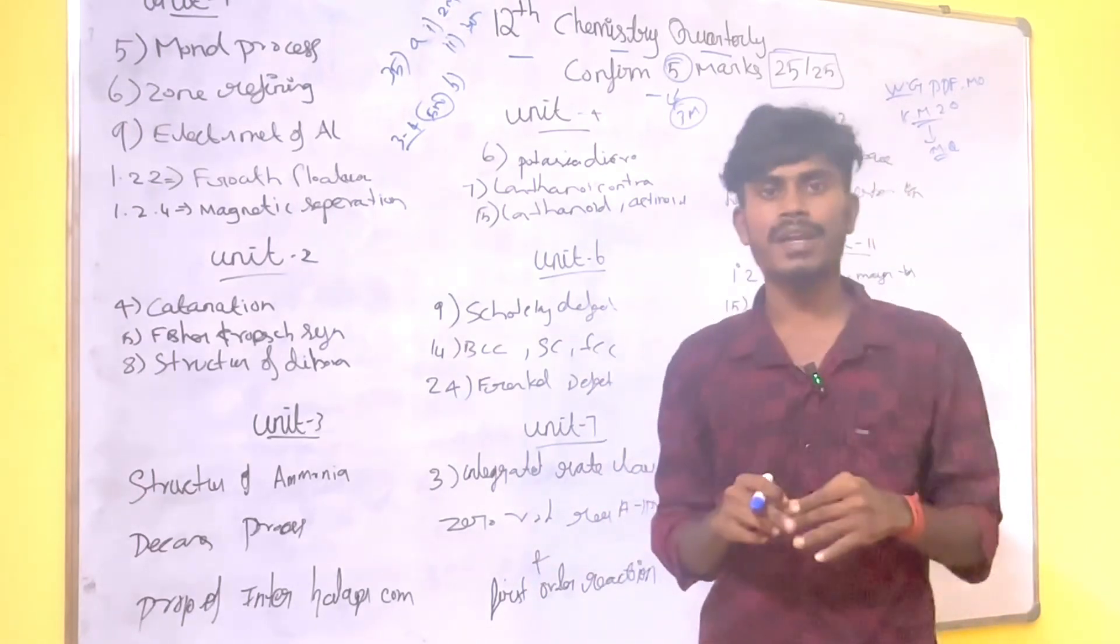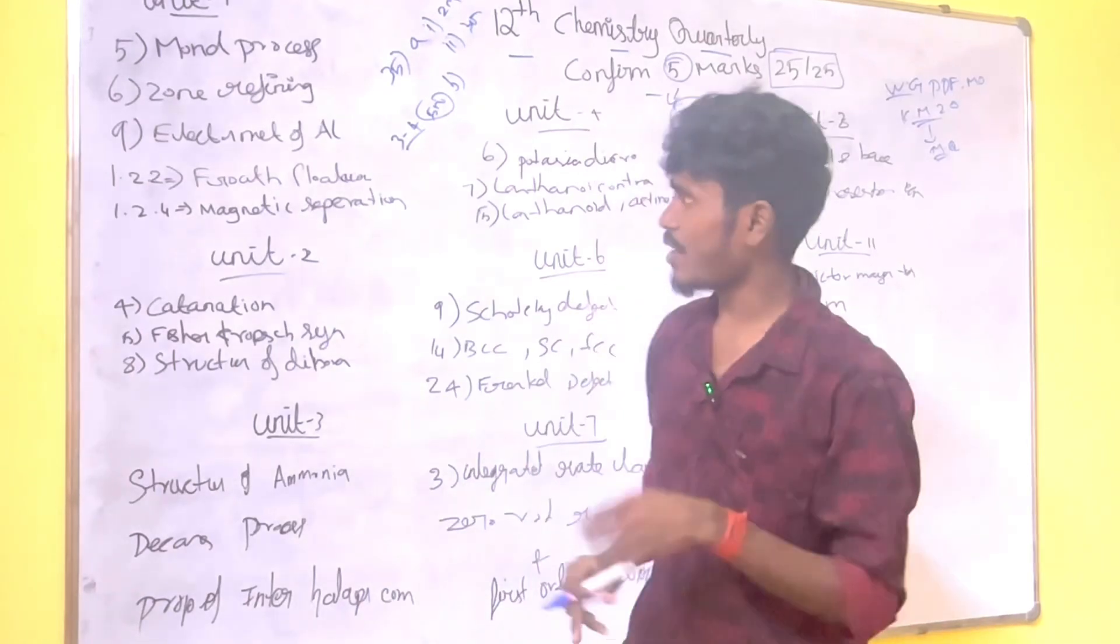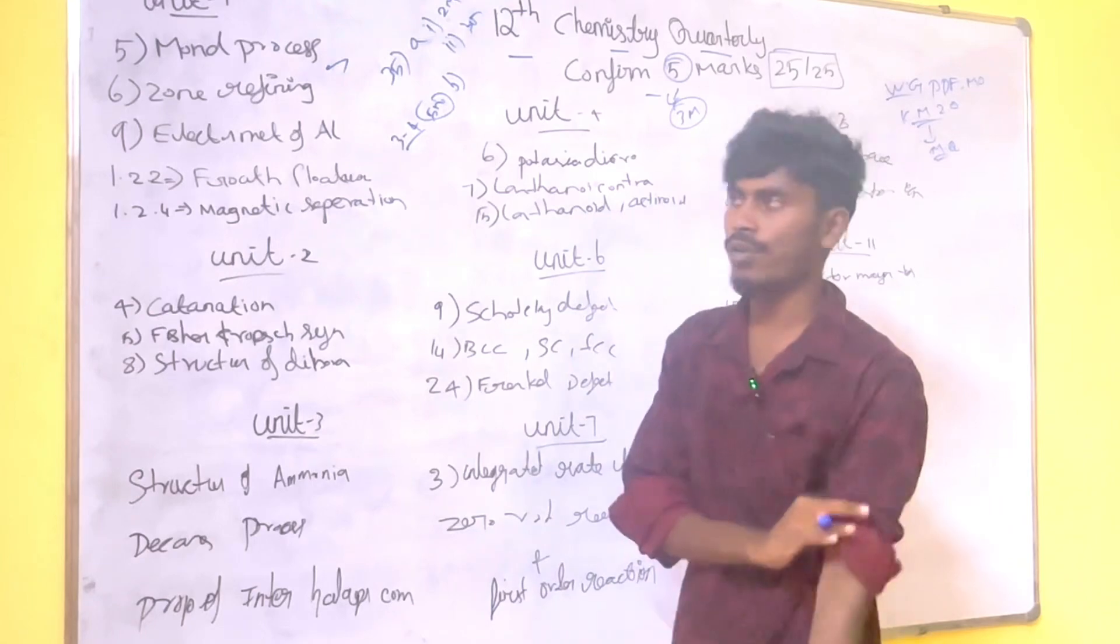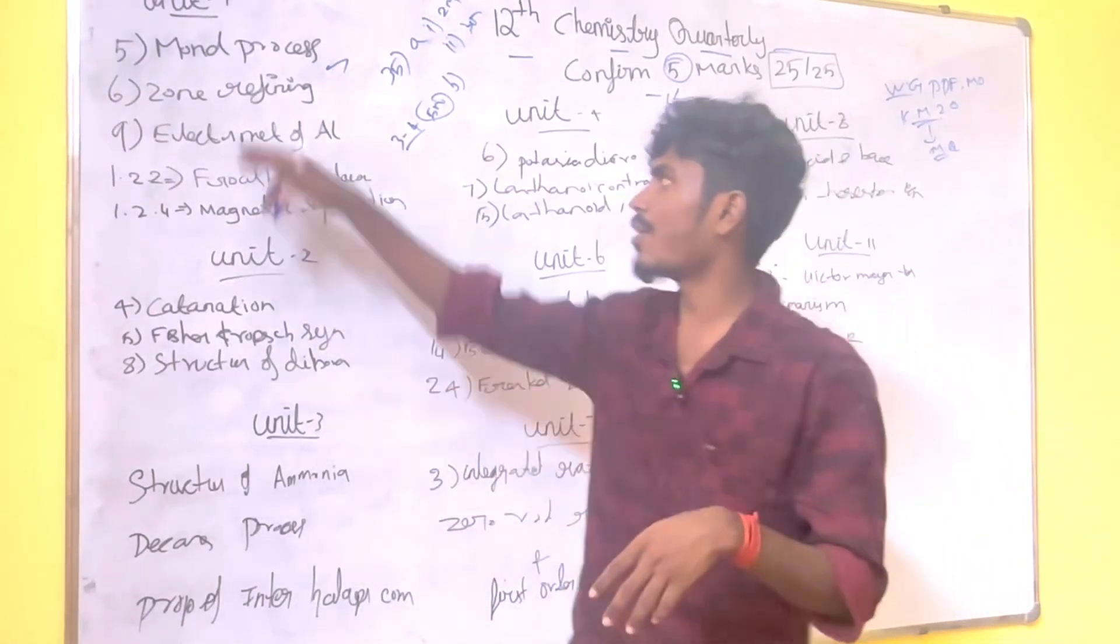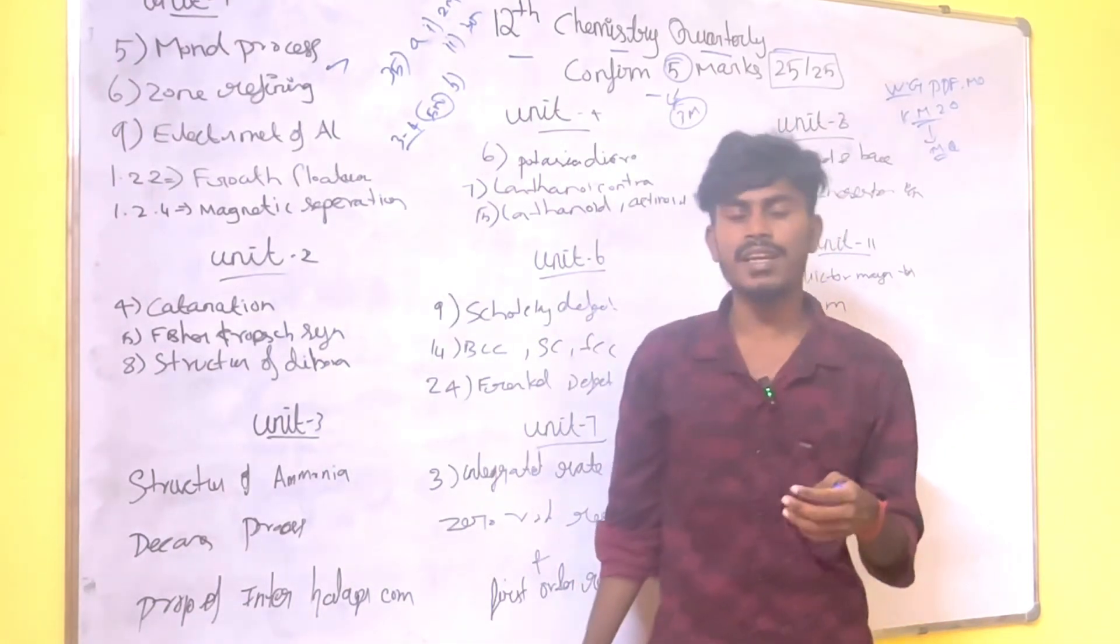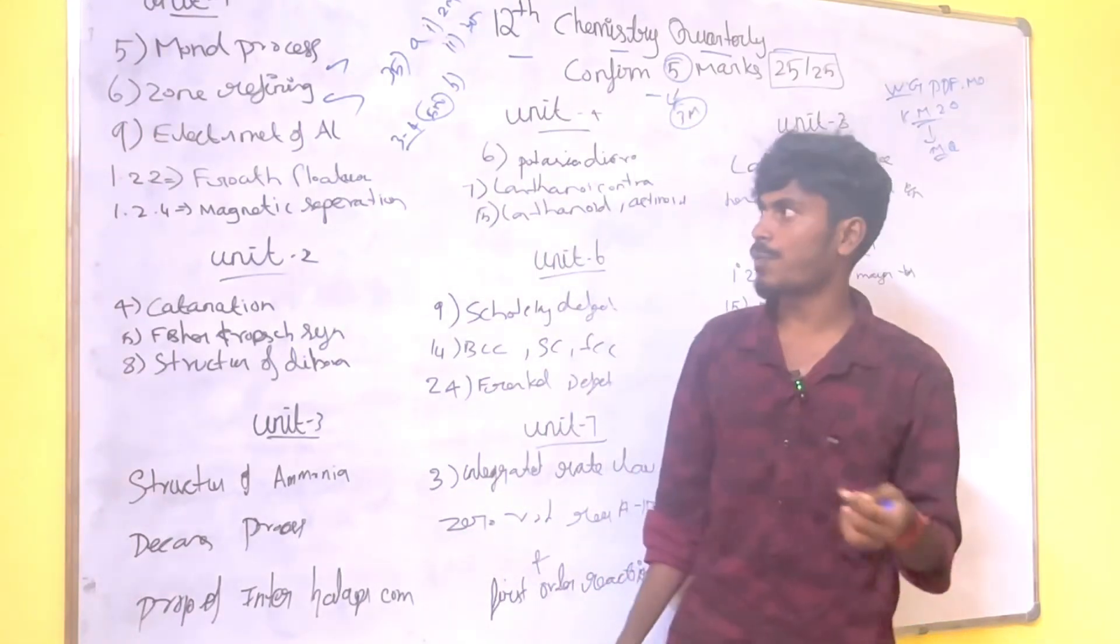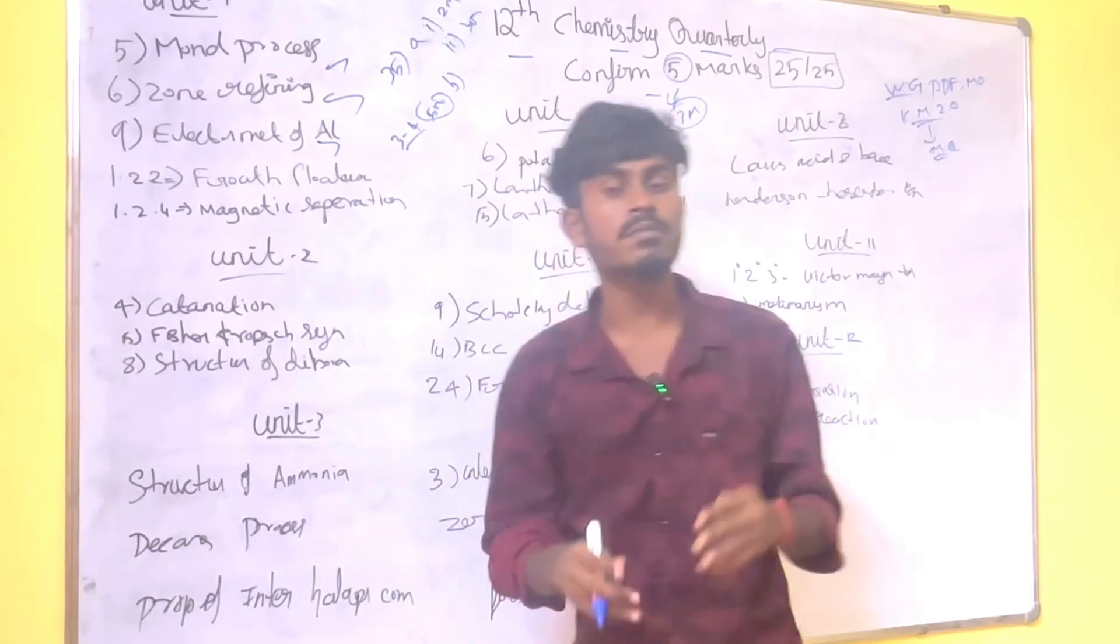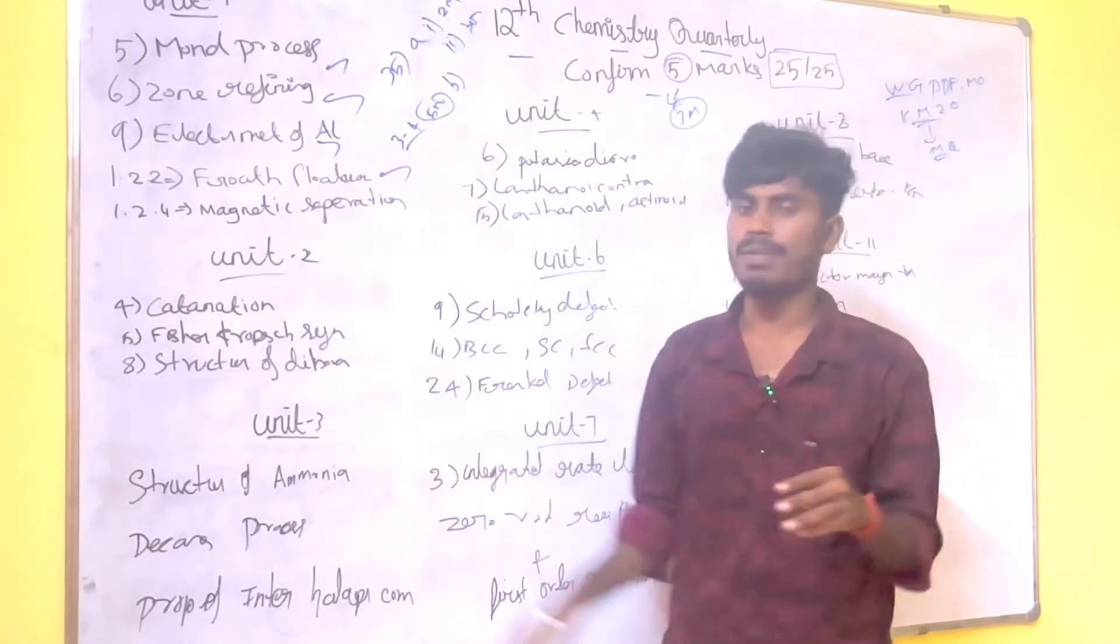The first thing is metallurgy. This is the 5-mark question. If you have a question about Tamil and English, the first question is the same word in Tamil and English. The zone refining process is very important. This is the 19th question. Electro metallurgy of aluminium is the most important question.